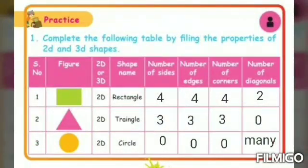Let's recall today's topic. Our today's topic is constructions of 3D shapes. The first figure is rectangle. Rectangle is a 2D shape. It has 4 sides, 4 edges, 4 corners and 2 diagonals.